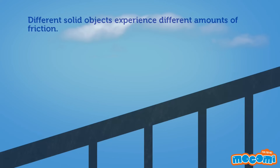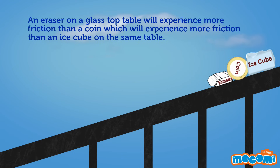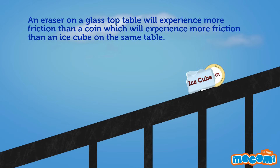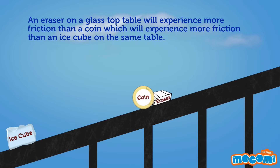Different solid objects experience different amounts of friction. An eraser on a glass-topped table will experience more friction than a coin, which will experience more friction than an ice cube on the same table.